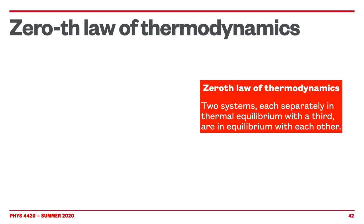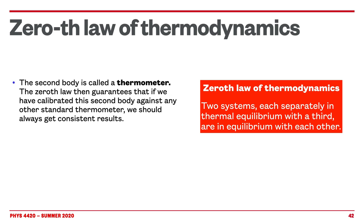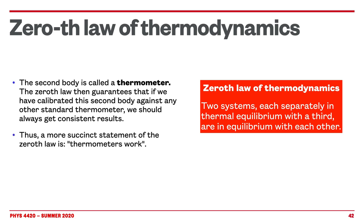Two systems which separately are in equilibrium with a third will be in equilibrium with each other. That seems obvious, but it's an important result. This law basically says that there is such a thing as a definition of temperature. Another way to say it: the second body can be called a thermometer, meaning we can calibrate a property called temperature and use it as a gauge to describe the thermal equilibrium of each system. In other words, the zeroth law means that we can make thermometers, and thermometers work.